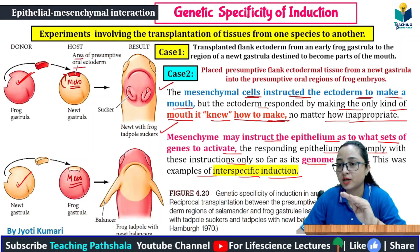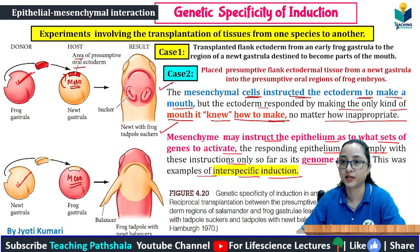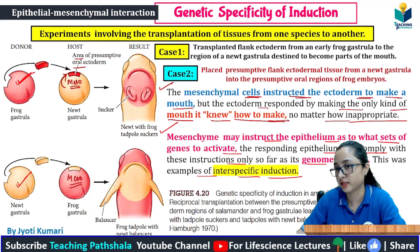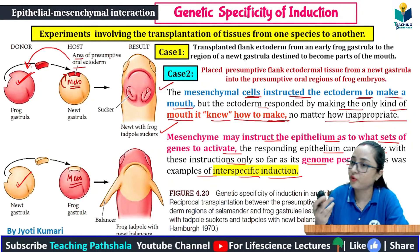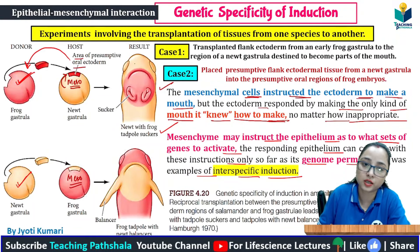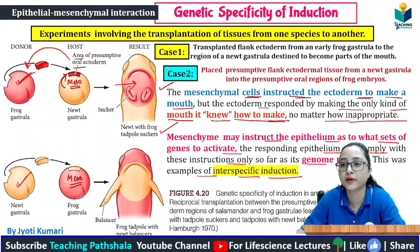Those genes are also being activated, but after that, everything that happens will occur according to the responding tissue's own genome — because only those genes that are present in its genome can be activated. Whatever genes it has, it will activate only those. If a gene is not present, it cannot activate it from somewhere else. The oral ectoderm, wherever it is placed, will make a frog's mouth — it follows its own genetic fate.